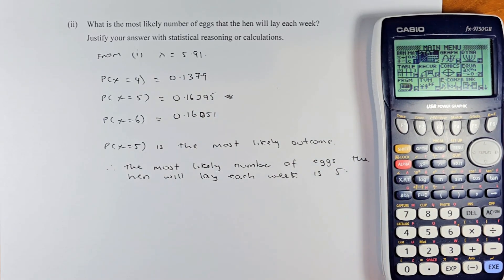Good day and welcome to question 2A part 2 of the 2023 NCEA level 3 statistics paper called Apply Poisson Distribution to Solve Equation. This is a merit question and we need a graphic calculator to solve this question. Without further ado, let's do this. The question is, what is the most likely number of eggs that the hen will lay each week? Justify your answer with statistical reasoning or calculation.